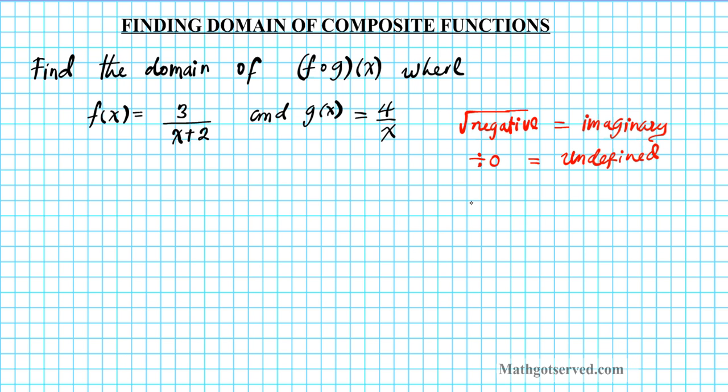If you have a square root of a function q, any time you have this situation, you want to take the radicand q and set it to be greater than or equal to zero. That's how you solve for the domain involving radicals.